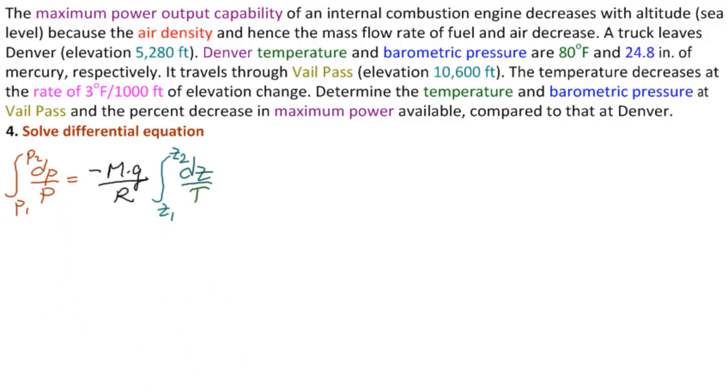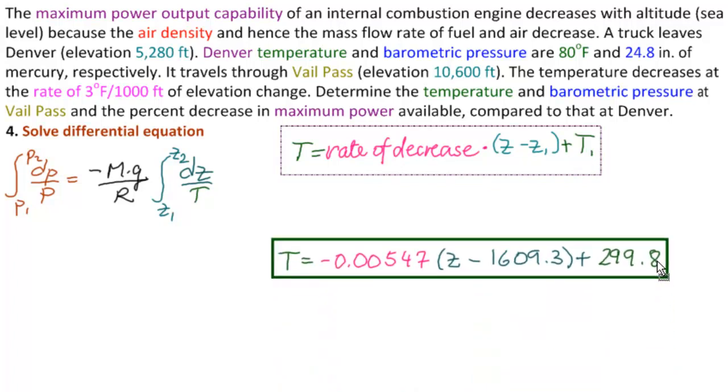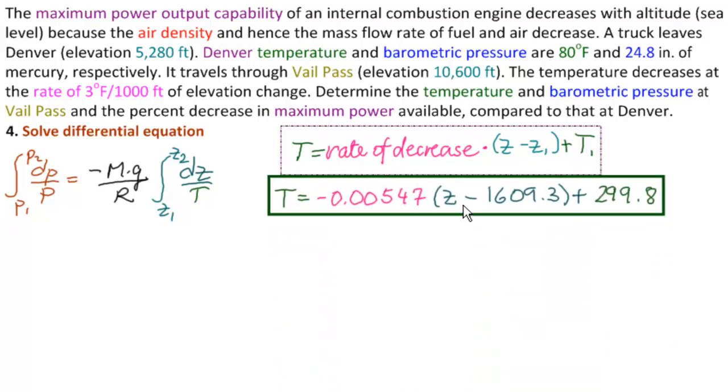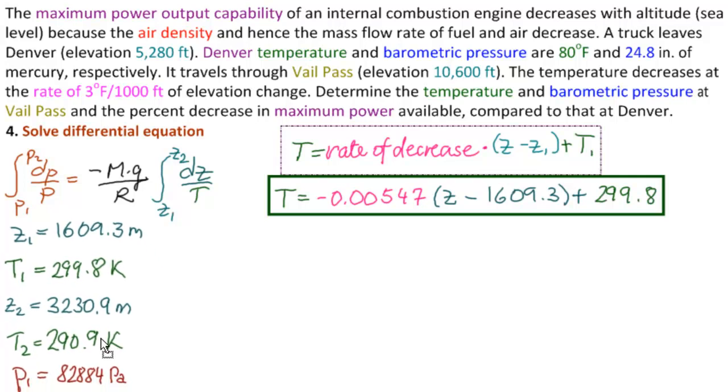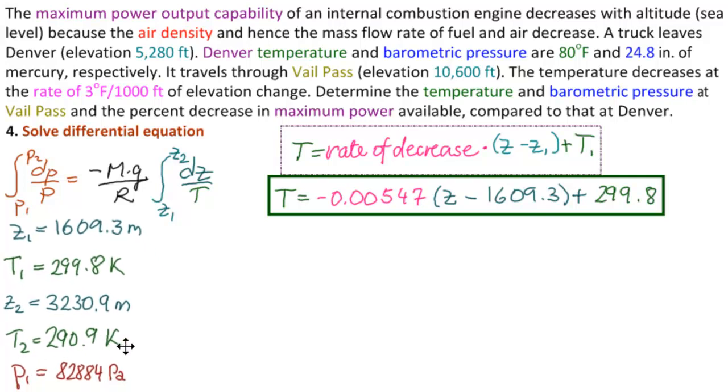And remember that in the last part we found t. We're going to put both forms up. We found t was equal to the rate of decrease times z minus z1 plus t1. And then we actually substituted our values into that equation. So that the rate of decrease was this in Kelvin versus meters. And then also we had also determined t2 in the last part.